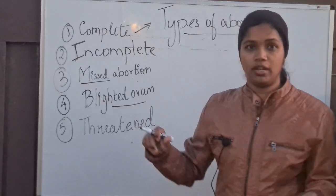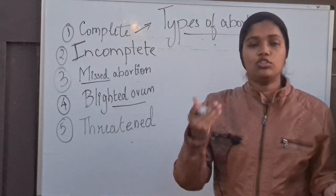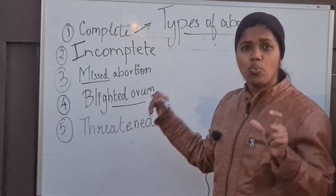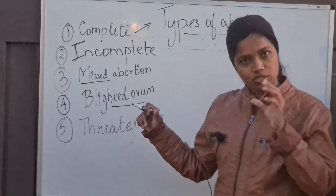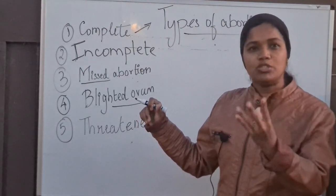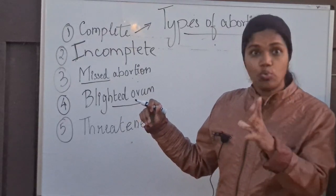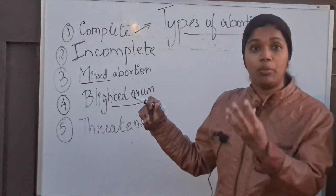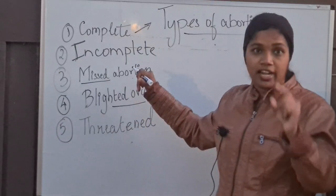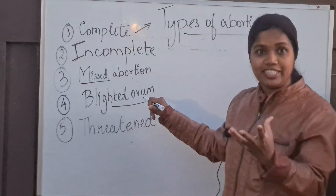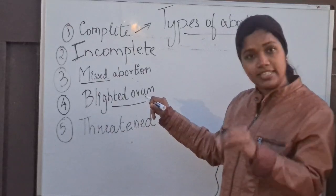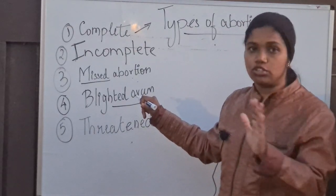Blighted ovum, also known as anembryonic ovum, means that initially there was an ovum along with the placenta progressing well, but for some reason the ovum has been completely resorbed — the gestational sac is empty with no embryo at all, though the placenta will be there. In missed abortion, the fetal heart rate alone is absent, but in blighted ovum the gestational sac itself is empty. The uterus will not contract and the cervix will be closed. The treatment is again evacuation of the uterus.